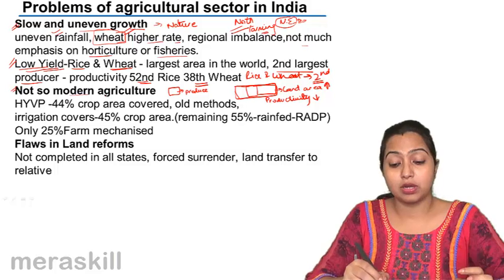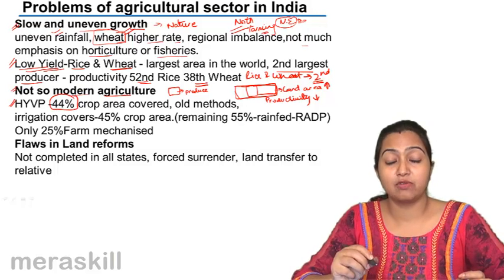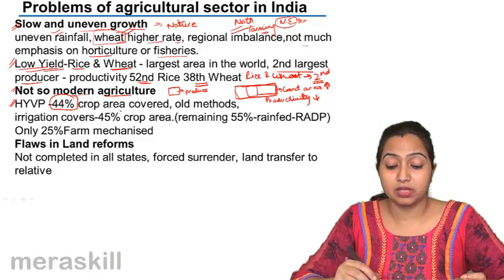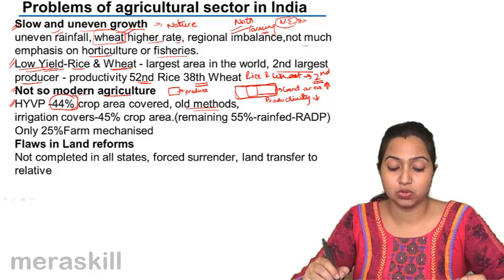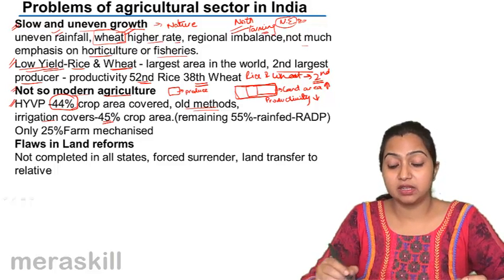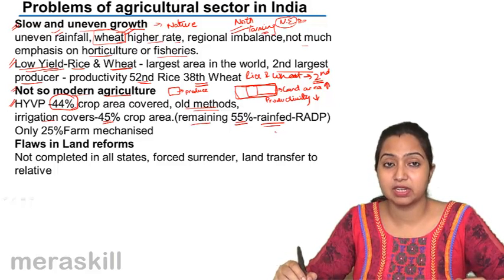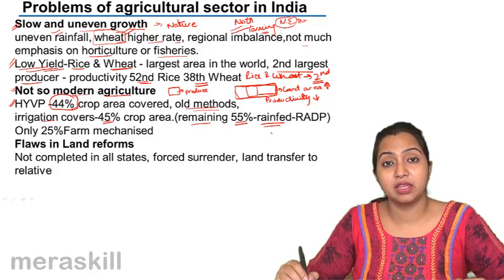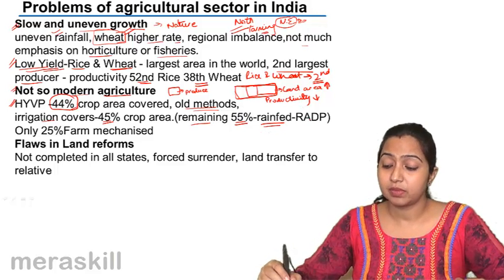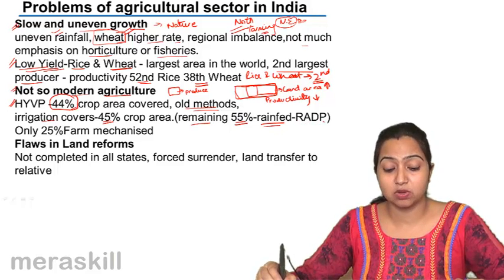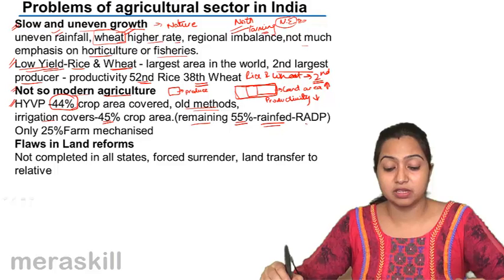Agriculture has not modernized as much as it should have. The high-yielding variety program has spread to only 44% of total agriculture crop area. There are still many areas where old and primitive methods are used for farming. Irrigation covers only 45% — the rest, 55%, is rain-fed and dependent on rain. For that, a rain area development program has also been launched by the government to preserve and utilize rainwater.